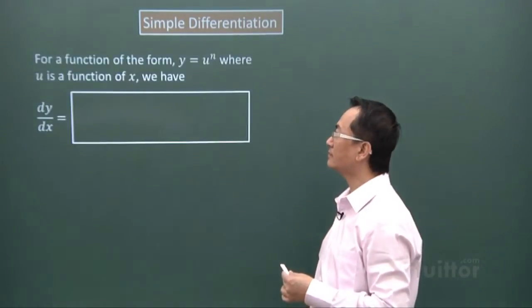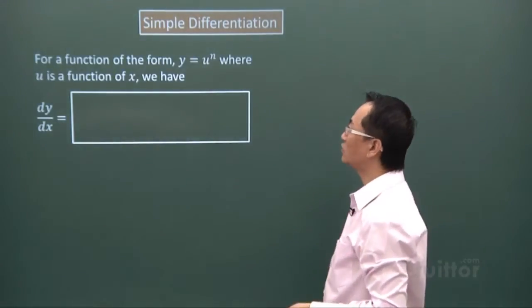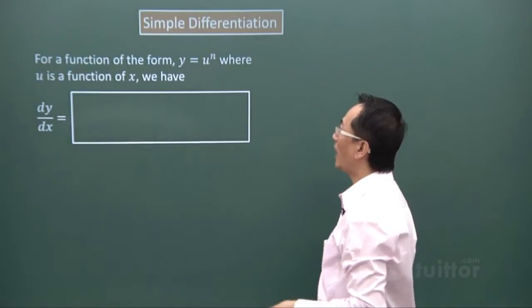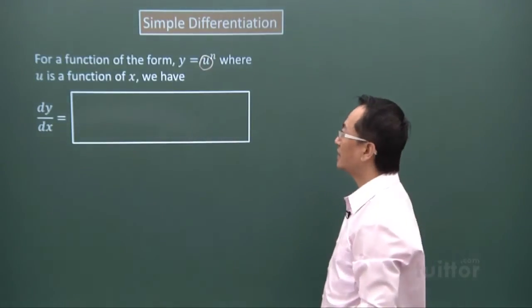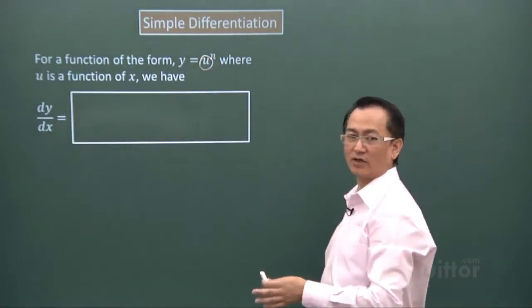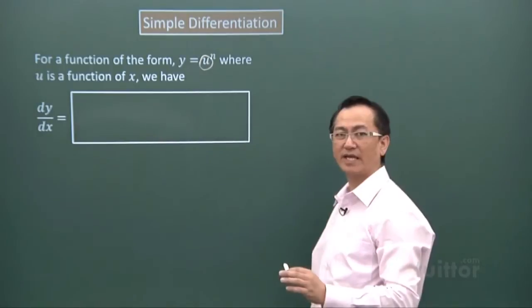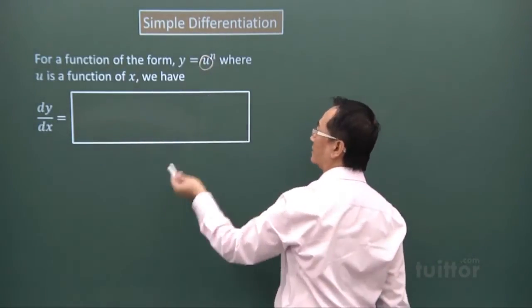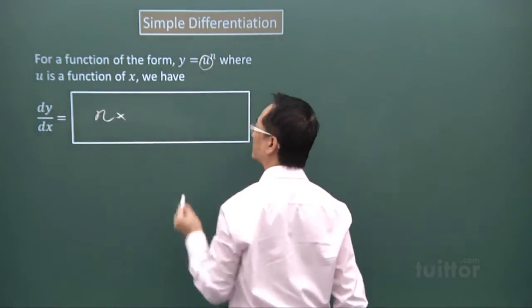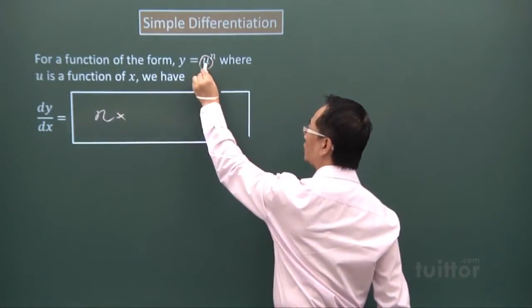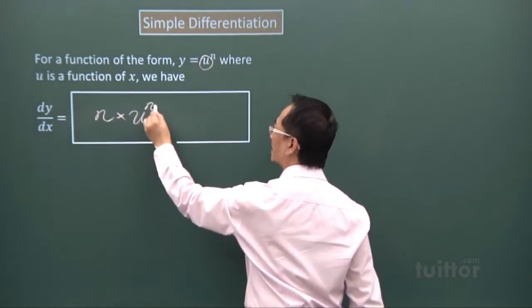Take a very simple function here: y equals u to the power of n, where u is a function of x. This is almost like your shortcut to the chain rule. Just follow the step; it's very mechanical. The index is n, so you write it here, then multiply to whatever you see here, u to the power of n, but you reduce the index by one.